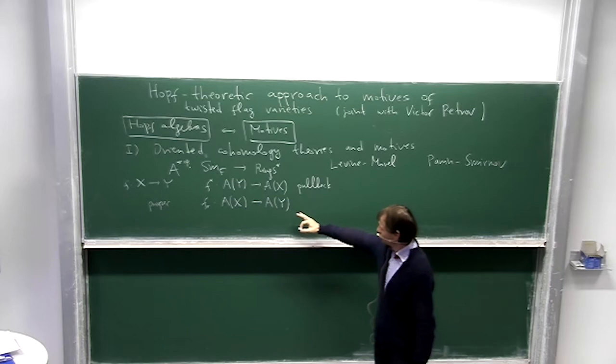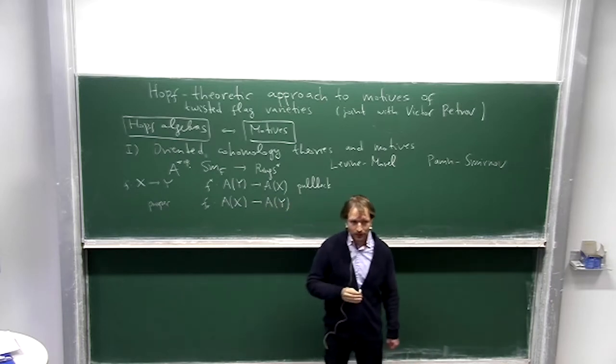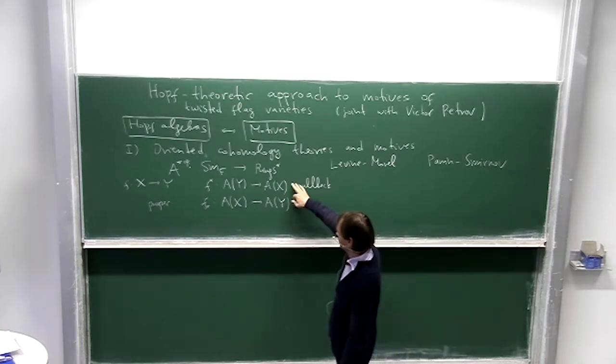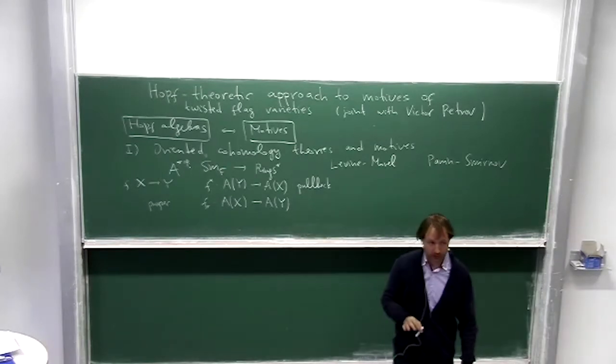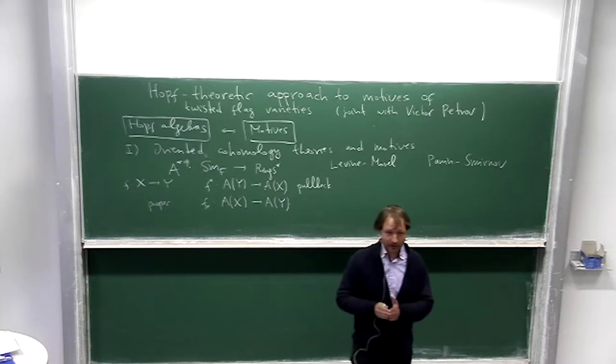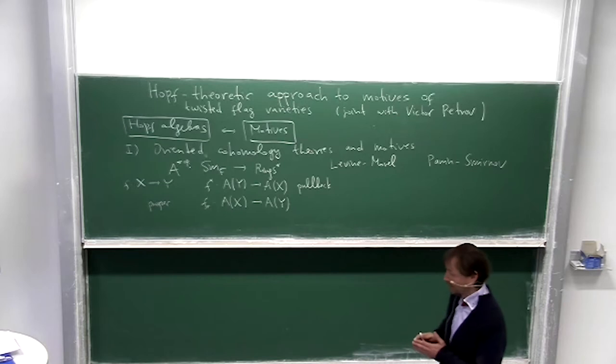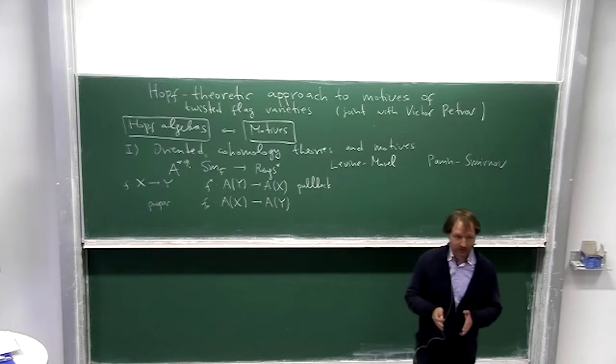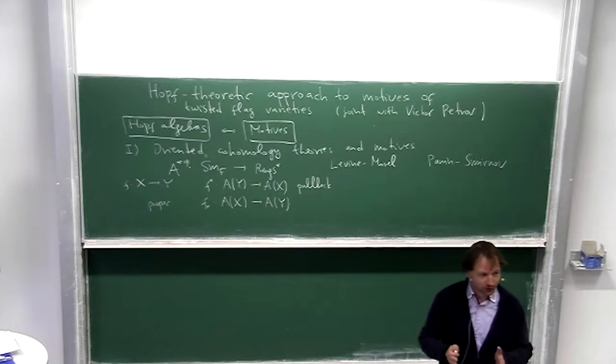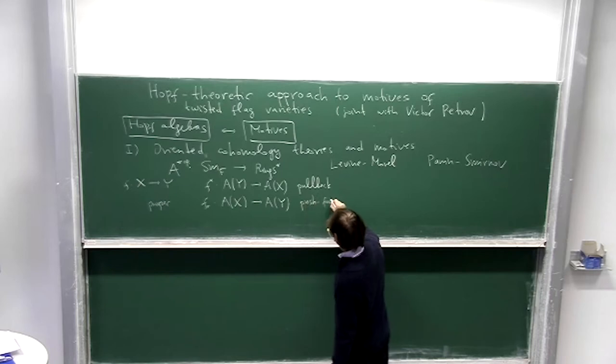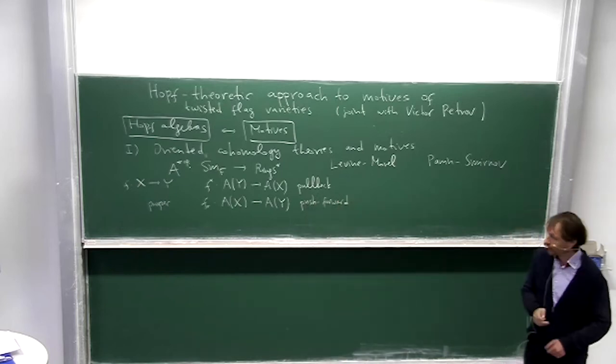Actually here we have a shift of grading but it's not important. This is a ring homomorphism but this is just a group homomorphism. So these are axioms and these are properties. The most familiar axioms are some sort of familiar to everyone like homotopy invariance, localization property, projection formula for example.